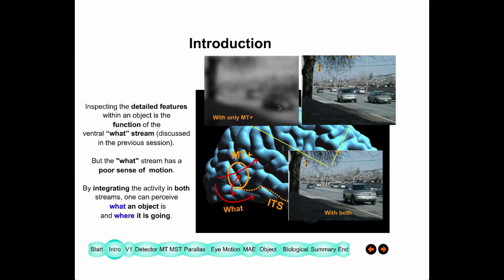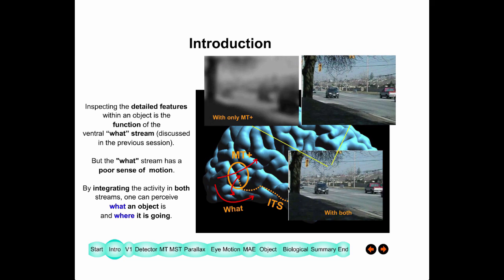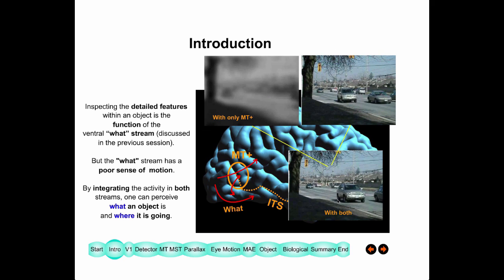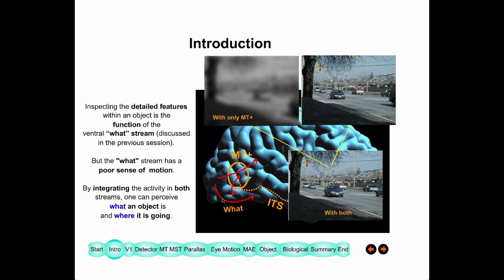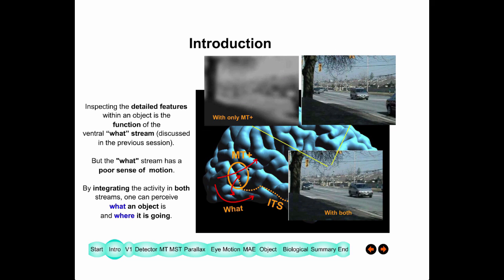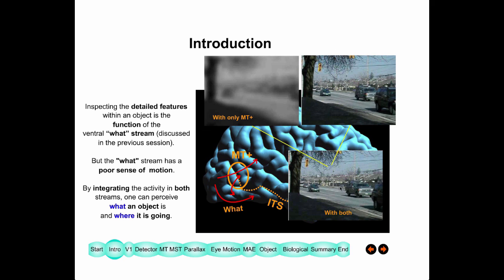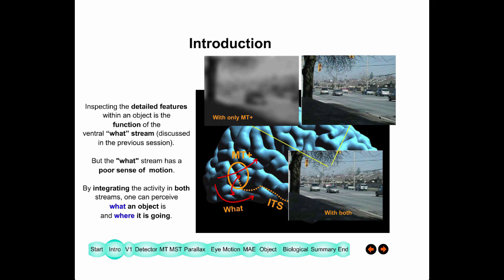When you have both MT working and LOC working, you get a clear image where you see both what the object is and where it is and how fast it's moving. That's done by a combination of your what pathways and your where pathways. The where pathway provides a clear sense of motion, while the what pathway tells you what it is that is moving at that speed.